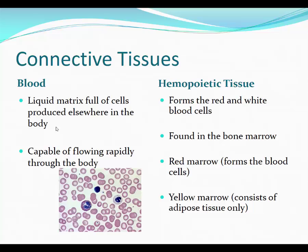Blood is made up of different cells with different functions. The matrix is the plasma — that's the fluid — and then the cells are the red blood cells, white blood cells, and platelets. We also find a blood-like tissue in the bone marrow; the red and yellow bone marrow is a fluid tissue similar to blood and has stem cells in it — it's called hemopoietic tissue. Just know that blood is a tissue and the matrix, the fluid part, is our plasma.